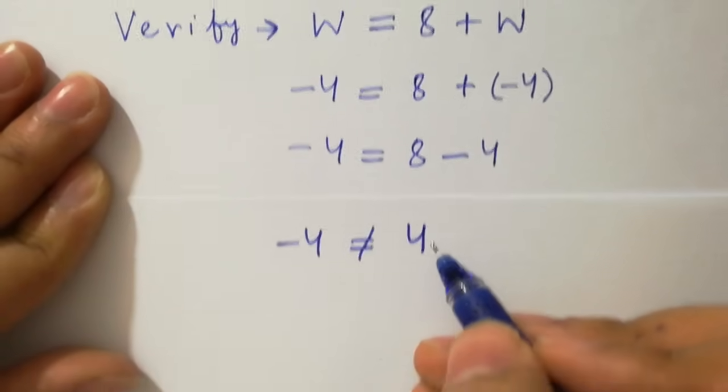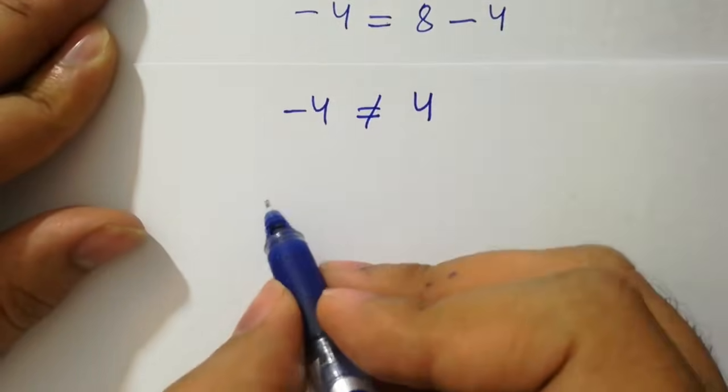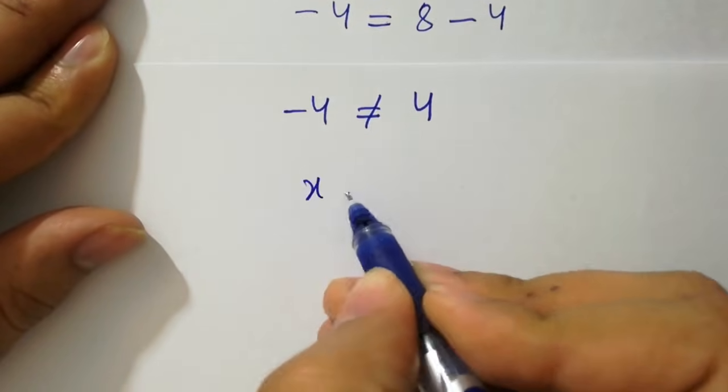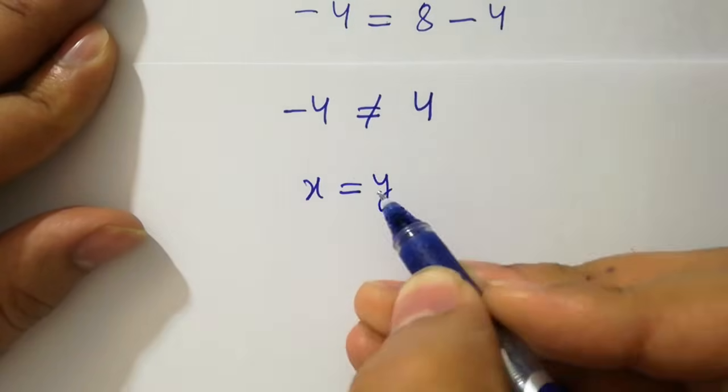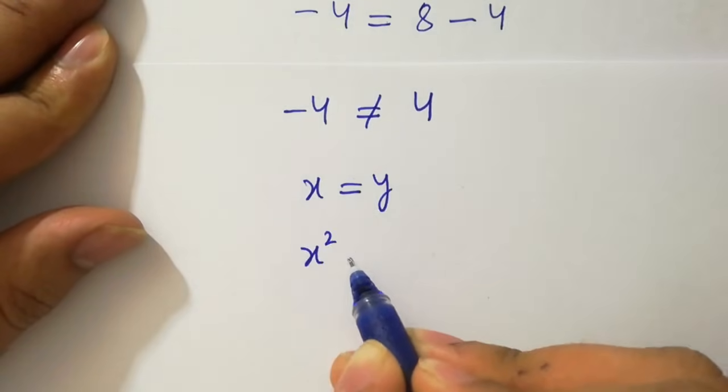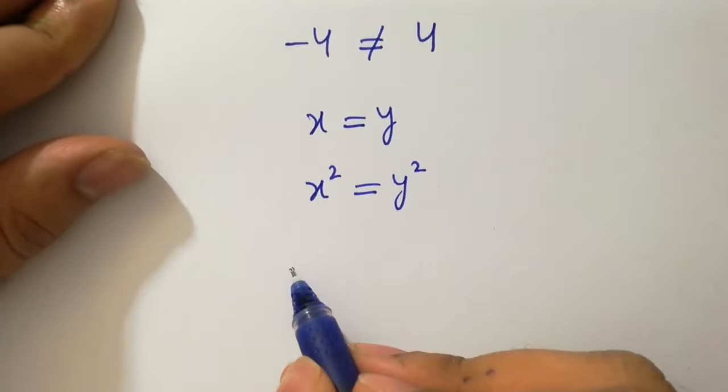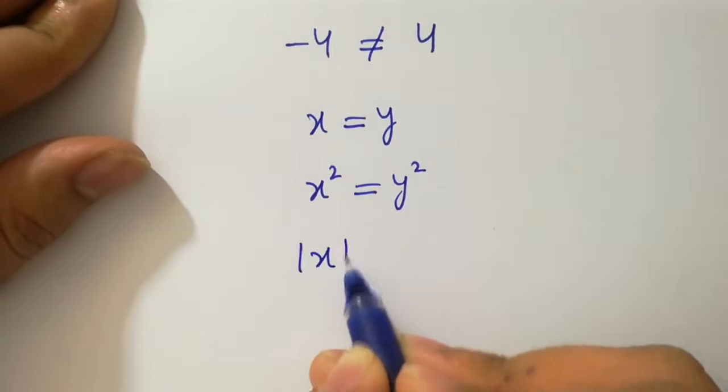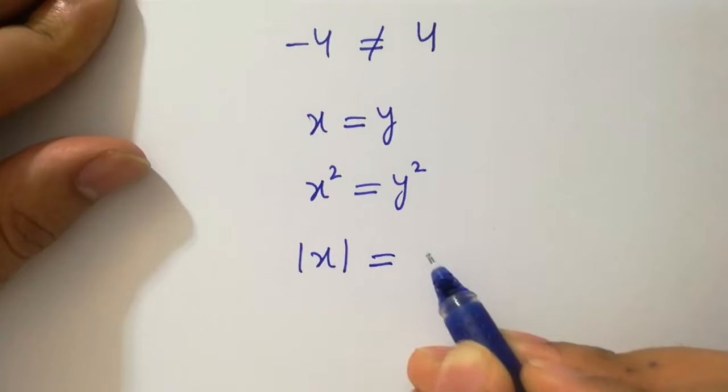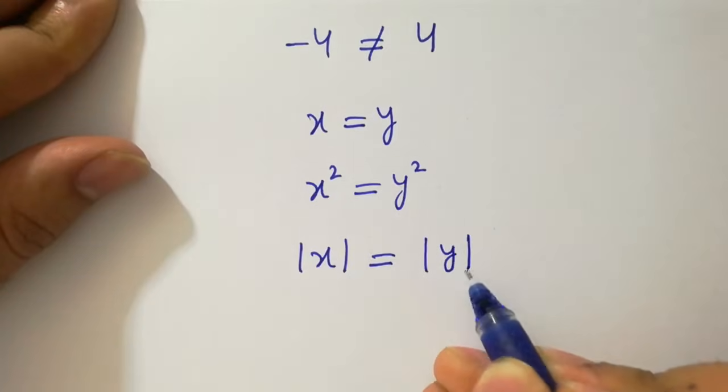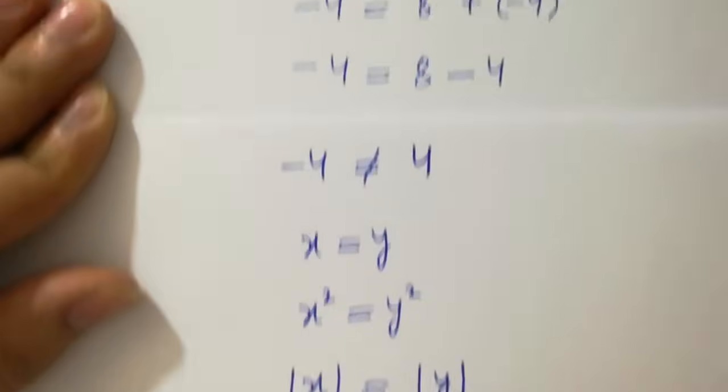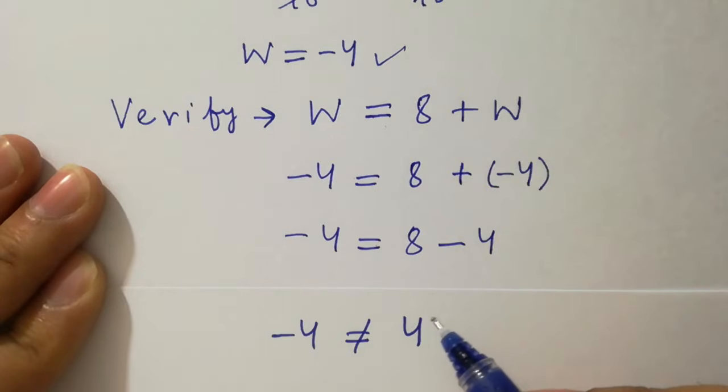As x equals to y, x square equals to y square. Then also absolute value of x equals to absolute value of y. Then we should take modulus on both sides.